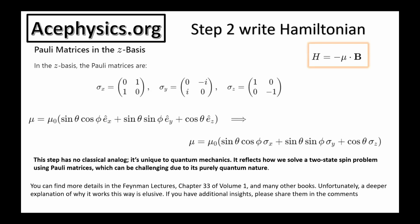Step two: write the Hamiltonian. The energy of a current loop in a magnetic field is given by H equals negative mu dot B. Here we introduce the Pauli matrices sigma-x, sigma-y, and sigma-z, which are essential in quantum mechanics. The key step is to replace the unit vectors in our expression with these Pauli matrices — replacing e-x with sigma-x, e-y with sigma-y, and e-z with sigma-z — to form the mu operator. This step has no classical analog; it's unique to quantum mechanics and reflects how we solve a two-state problem using Pauli matrices. You can find more details in the Feynman Lectures, chapter 33, volume 1, and many other books.